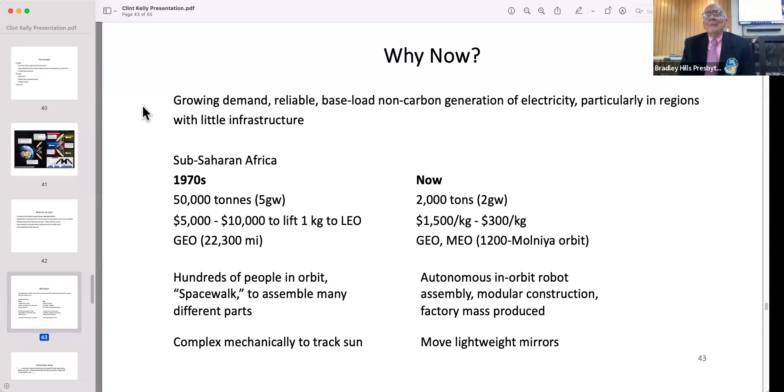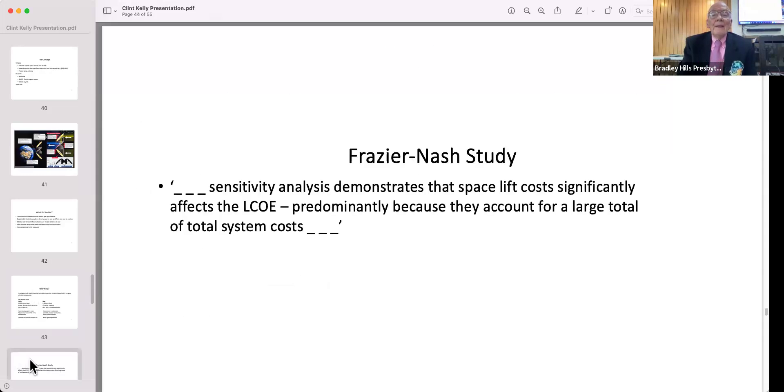Early on they were going to have a lot of people up there in orbit doing the assembly. Now it will be done mostly in factories on Earth. You'll have modules, they'll go up like Legos, you click them together, robots will do the clicking, and you're good to go. Space lift is a big problem.